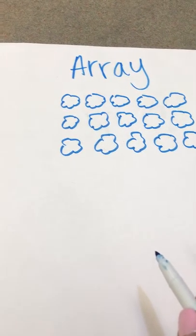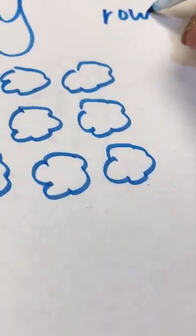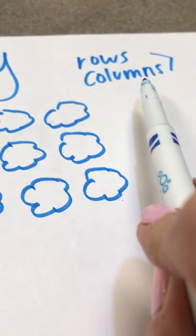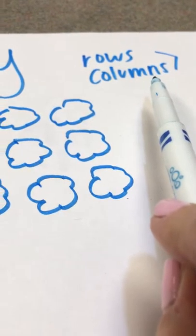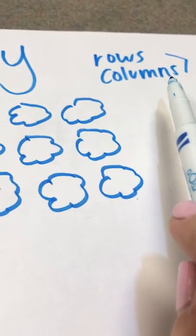How we teach arrays is based on rows and columns, and this part right here is actually the hardest part of learning the array strategy because believe it or not, students do not know the difference between rows and columns.